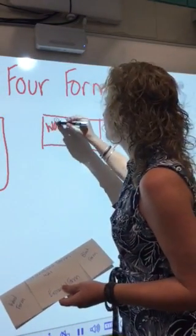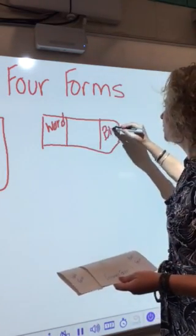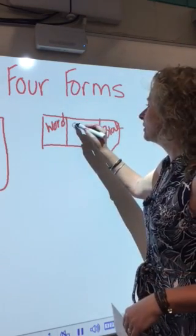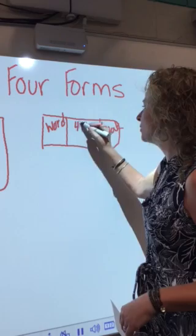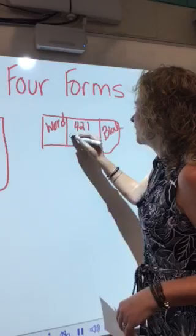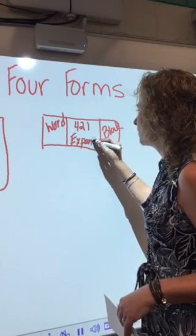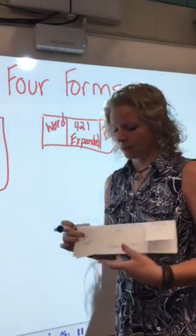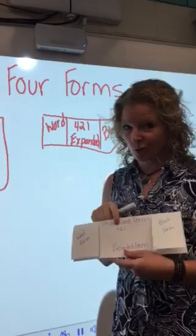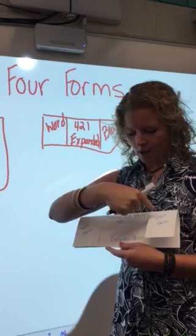Label this side word form, you're gonna label this side block form, and then in the middle you're gonna write a number in standard form. Then underneath that, you're gonna write the word expanded. So you've made a little flip book. Like mine—I chose a number in standard form, 421. I put word form, I put expanded form, and then block form.